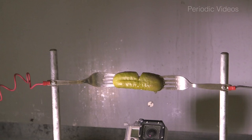And the current going through the whole gherkin must be the same but the current density will be higher in this small point and it will get hotter.